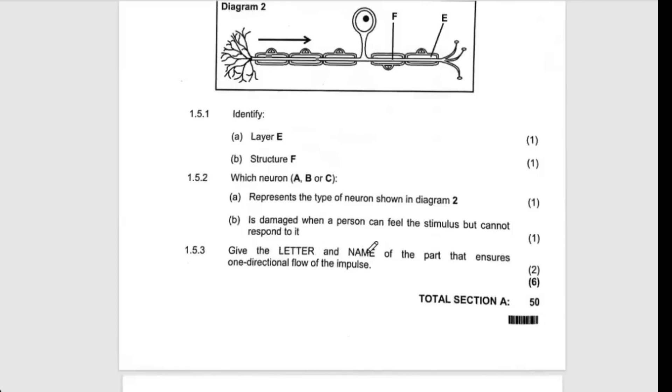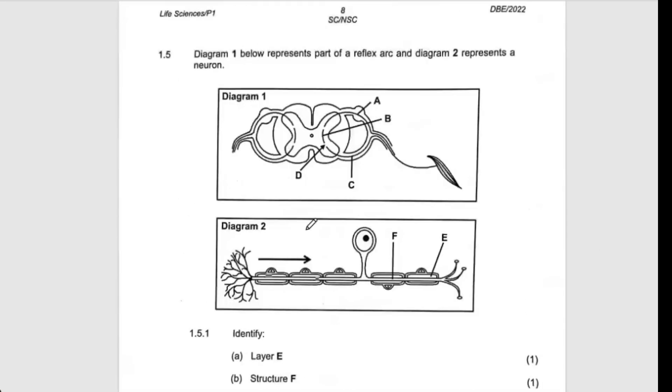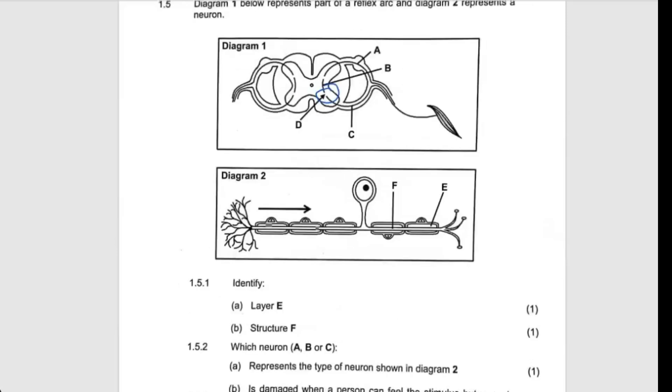Lastly, give the letter and the name of the part that ensures one direction flow of impulse. One direction flow of impulse is being done by the synapse. The major function of the synapse is to allow the impulse to move in one direction.